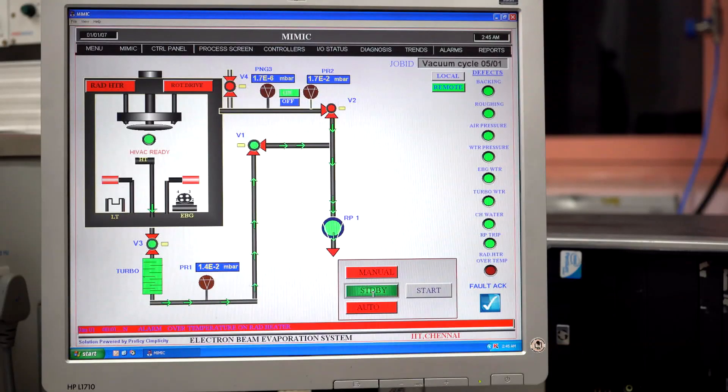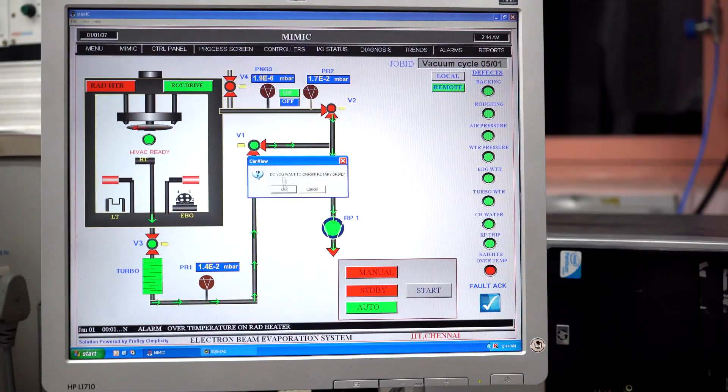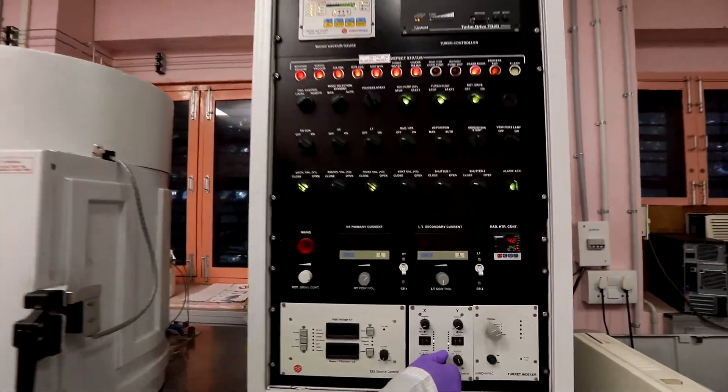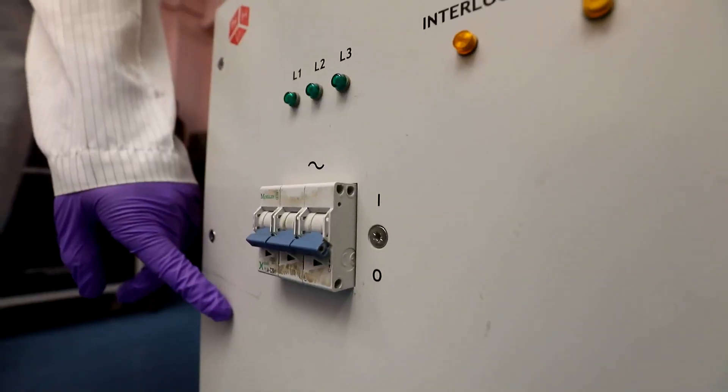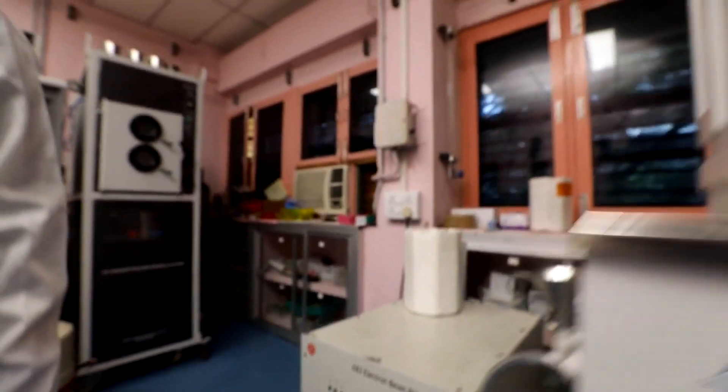Now switch off the sweep control, rotation drive, electron gun and pressure gauge. Wait for the temperature to ramp down to room temperature.